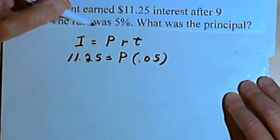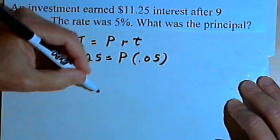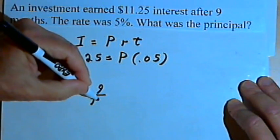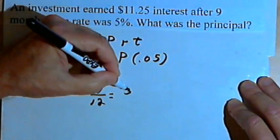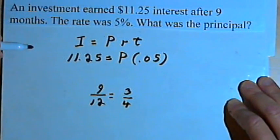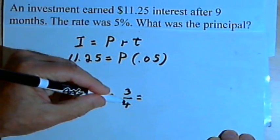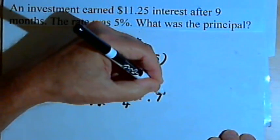Since we normally think of time in these simple interest problems in terms of years, we're dealing with nine months out of a 12-month year, or 9 over 12. We could reduce that to 3 over 4, but I think easiest would be to work with that as a decimal. So let's take that 3 fourths and make it into 0.75.